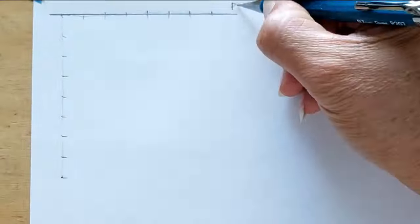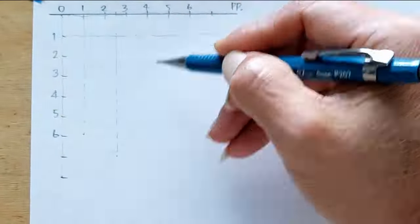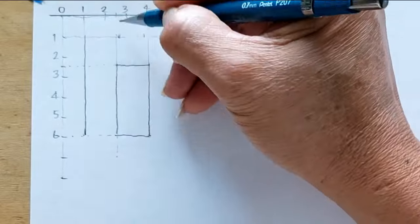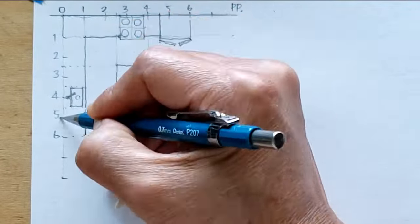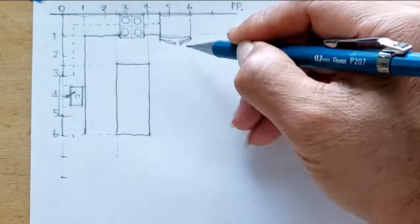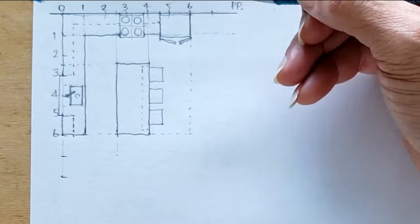Hello everyone, I would like to show you how to draw one-point perspective. In this case, it's an interior kitchen with an island in the middle. The unit scale is 6 by 6.